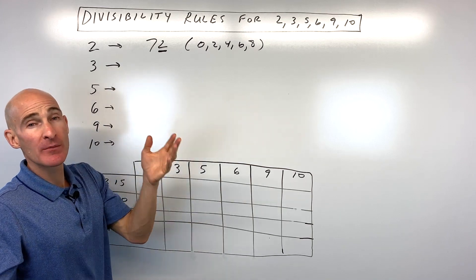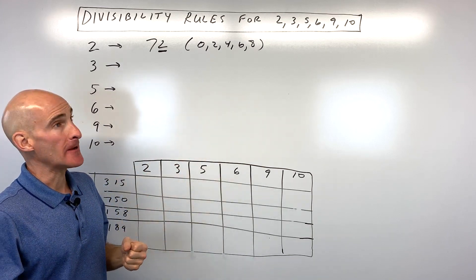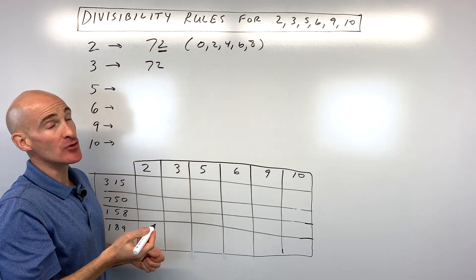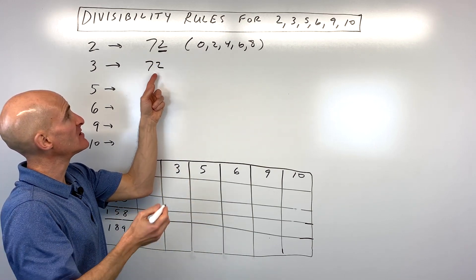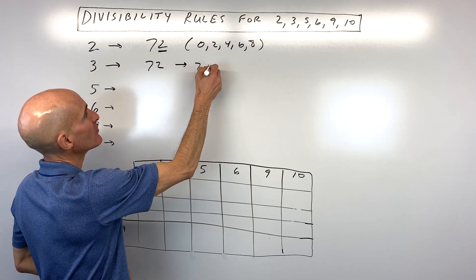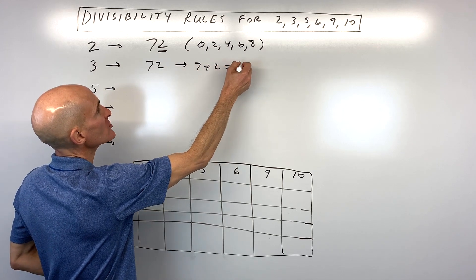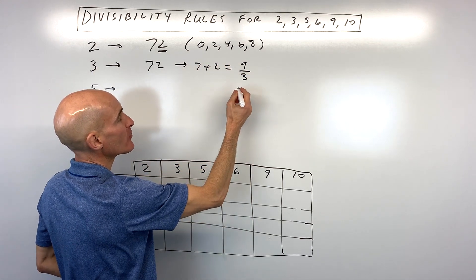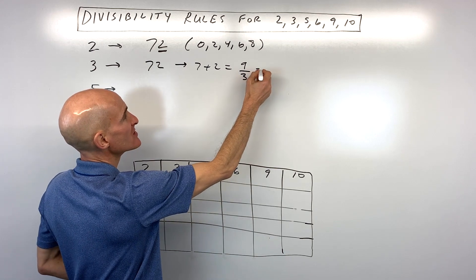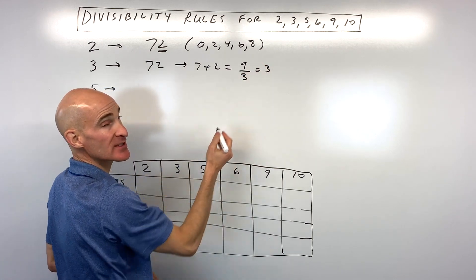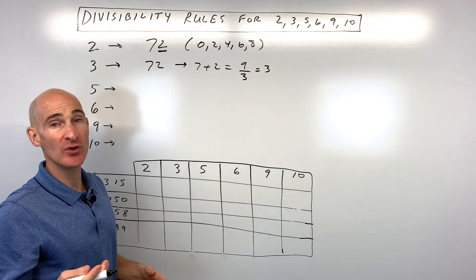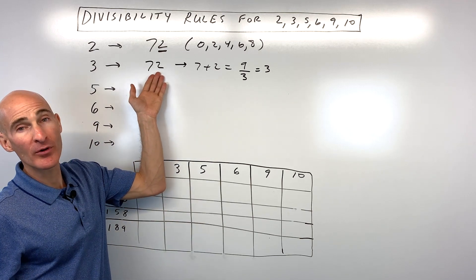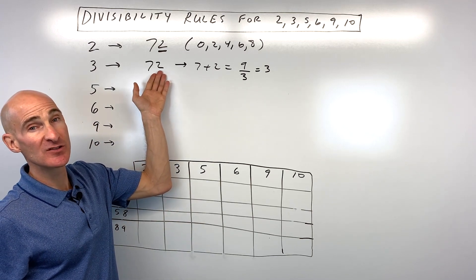How about for 3? How do you know if a number is divisible by 3? Well, what you want to do is take a number like 72 and add up the digits. So this would be 7 plus 2 equals 9. If the sum of the digits is divisible by 3 — which in this case 9 divided by 3 works out perfectly to an integer — then the whole number is going to be divisible by 3.